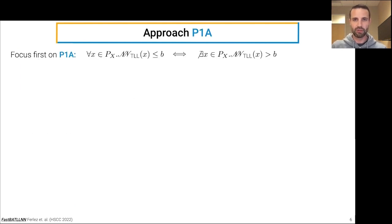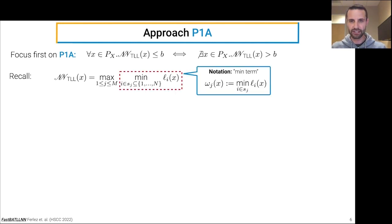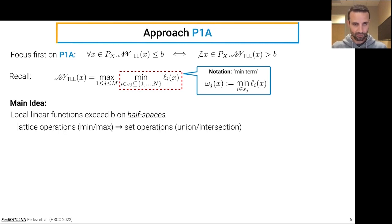So what approach do we take to problem 1A? Well, we can easily reformulate problem 1A in terms of looking for violations. So in particular, problem 1A is sat if there exists no violation, that is, there exists no X in P_X such that the output of the neural network exceeds B. So just recall, again, the definition of a TLL neural network, and we're going to have a specific notation here for the min terms. So each min term is specified by a selector set S_j, its corresponding min term, or the output of it, will be this omega_j of X. So the main idea is that each individual local linear function exceeds the verification property B on a linear half-space, and so we can convert these lattice operations of min-max to set operations of union and intersection over linear half-spaces.